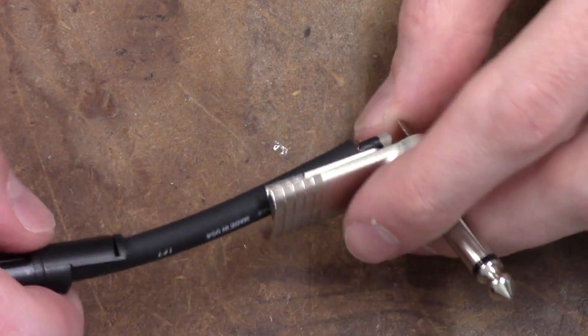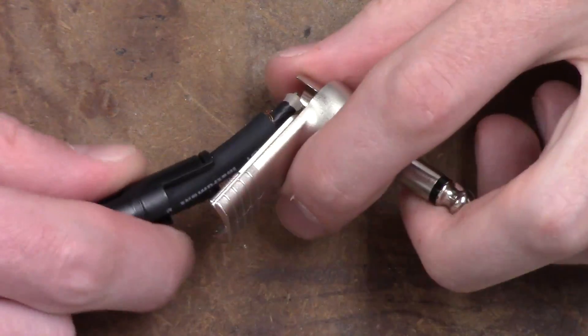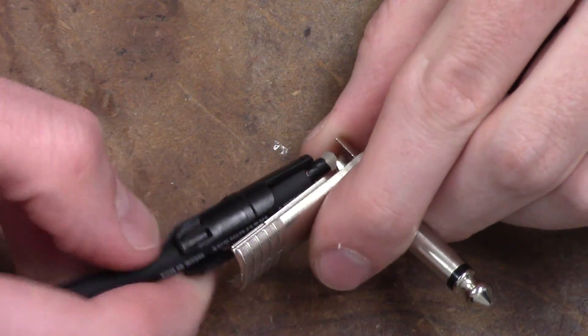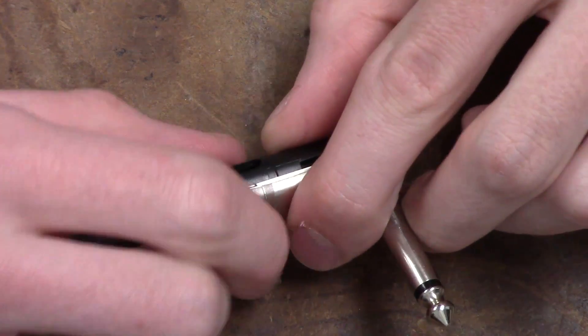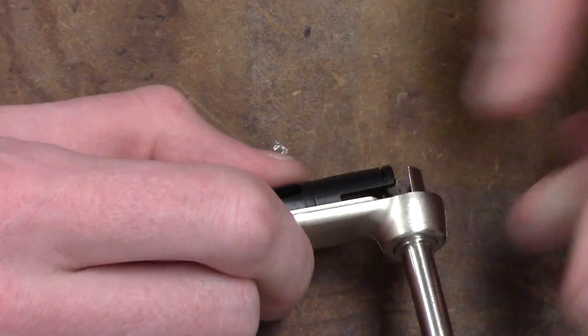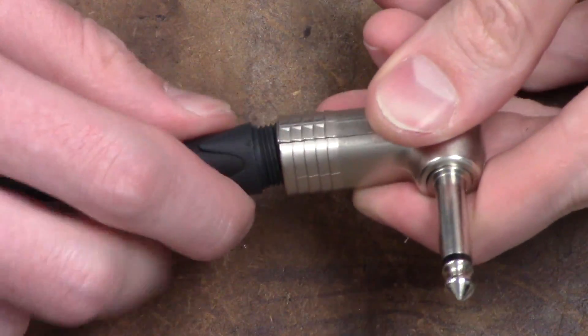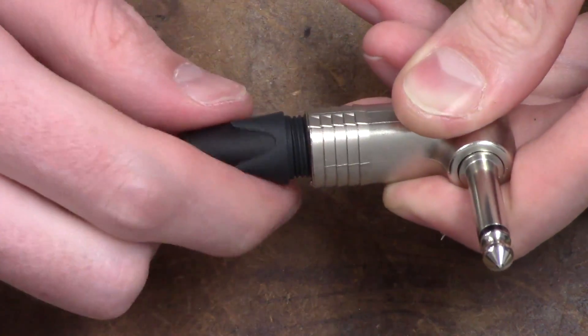Now we'll finish assembling the plug. First, slide the inner plastic cover up the cable, then slide on the outer cover. Now screw the plastic bushing into the plug's base.